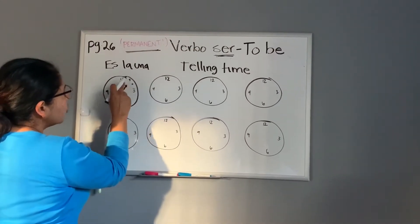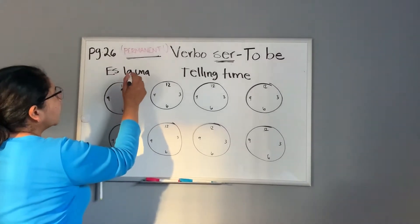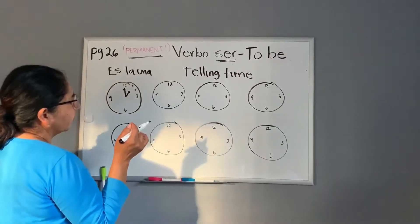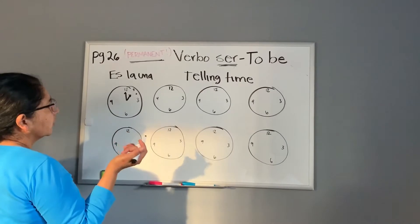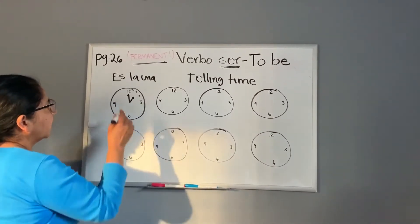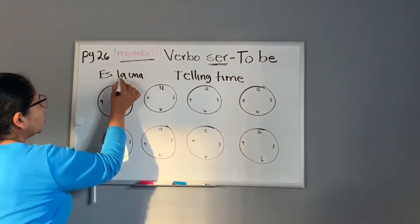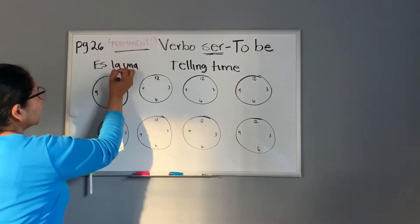So you will say es la una. Okay, for number one telling time, you will always say la una. Okay, for the rest of the time, you will say es o son las dos, son las tres, son las cuatro, son las cinco, son las seis. But only for one o'clock, you're going to use the feminine article, which is la.